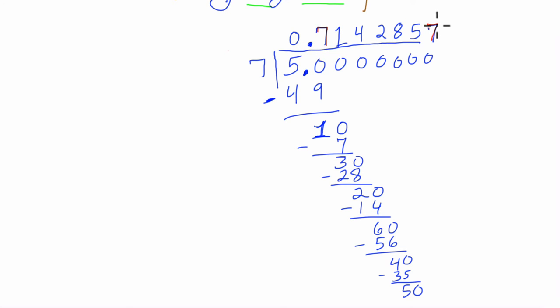So if you keep doing this, in fact, you will get another 7, and then a 1, and then a 4, then a 2, then an 8, then a 5, and so on.